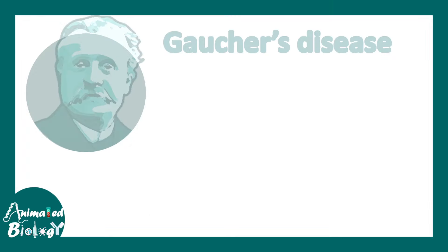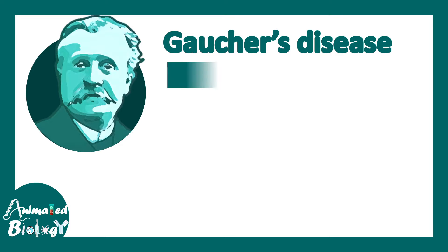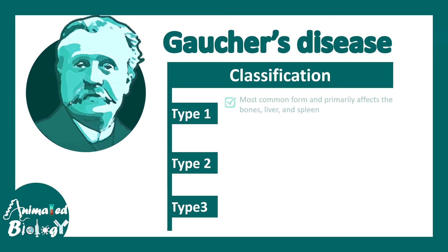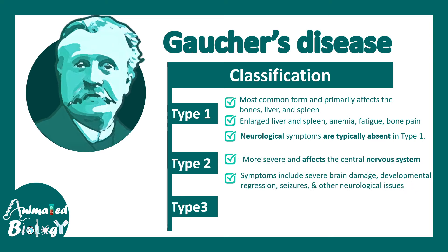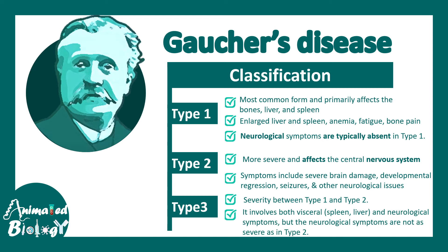Gaucher's disease has three subtypes. Type 1 involves the spleen, bone, and liver but does not involve many neurological symptoms — enlarged spleen and liver is the key symptom. Type 2 involves the nervous system, including seizures, developmental delays, and neurological issues. Type 3 has intermediate severity between Type 1 and Type 2, involving both visceral and neurological symptoms, but the neurological symptoms are not as severe as Type 2.